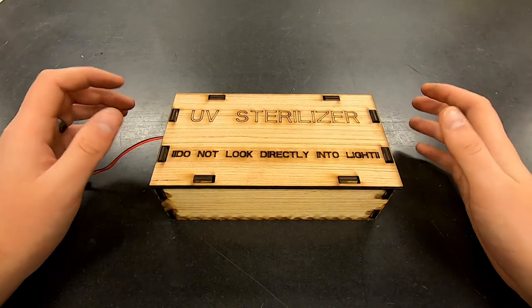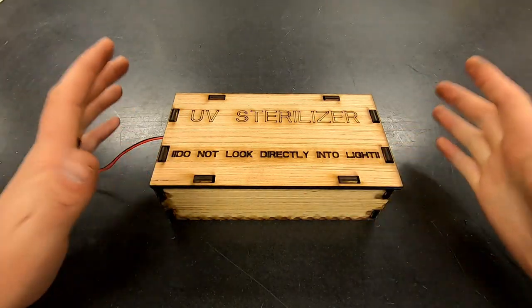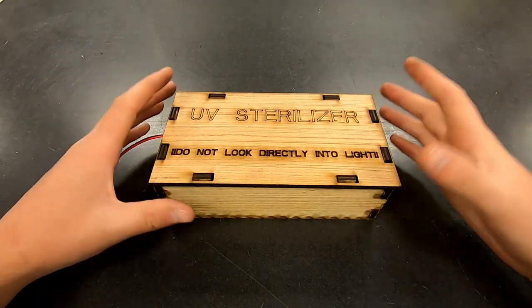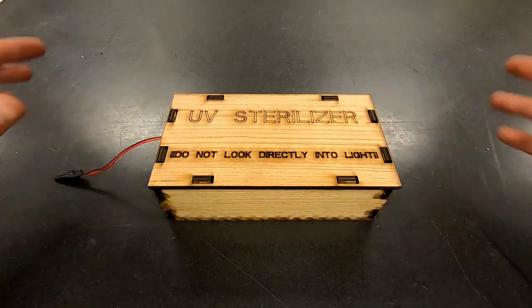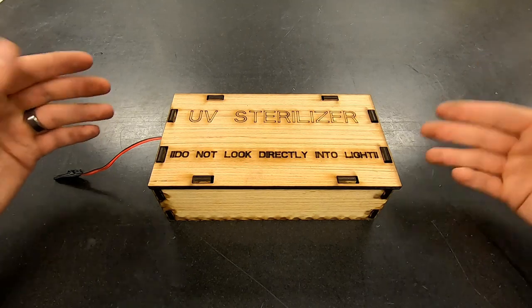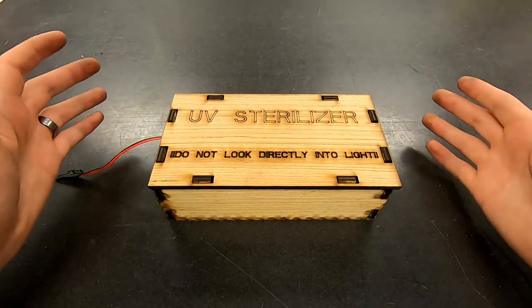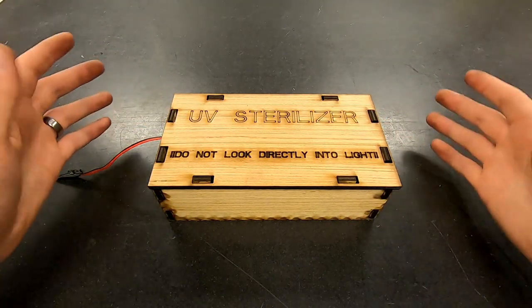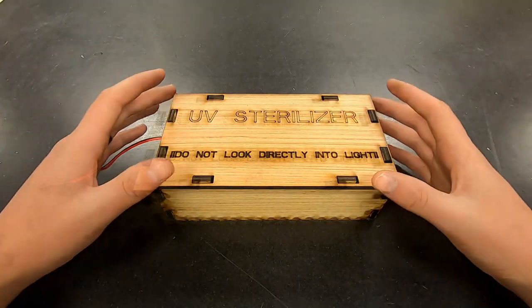You do want to be careful with this. As it says on the box, don't look directly at the lights as UV light can be harmful to your eyes. Anything you place under here is going to be okay. It's a fairly low power UV light, so it's not going to do damage very quickly. But over a longer period of time it will actually do the sterilization that it's meant to do.